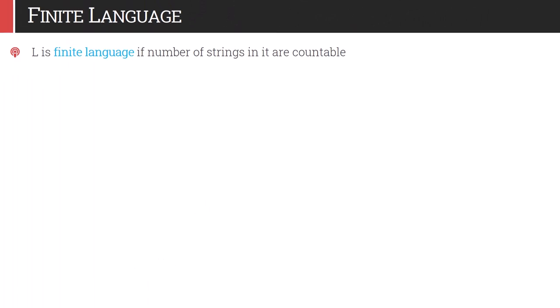What is finite language? We need to understand what kind of language finite automata will accept. A language L is called a finite language if the number of strings in it are countable. Consider a finite automata F which accepts the C language — we give some string as input, and if the string satisfies the rules of that language, the automata will accept it and go to the accepted state. If the string is not a member of the language, the finite automata will reject it. So finite automata have two outcomes: accept or reject the input string based on defined rules.